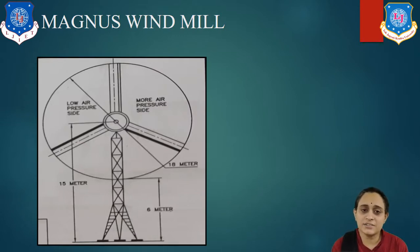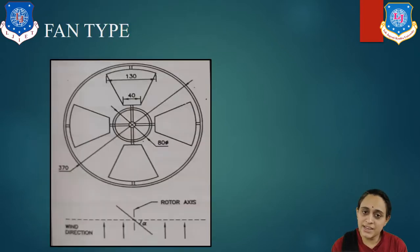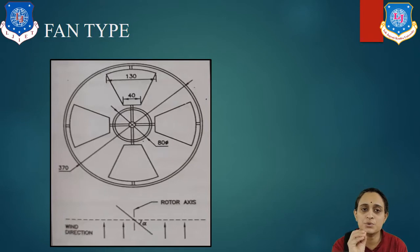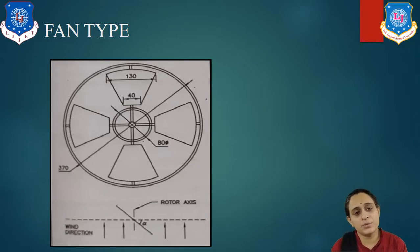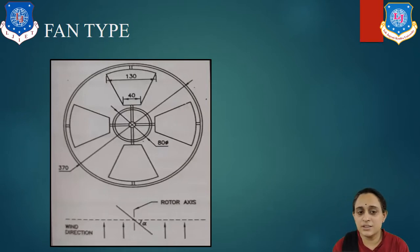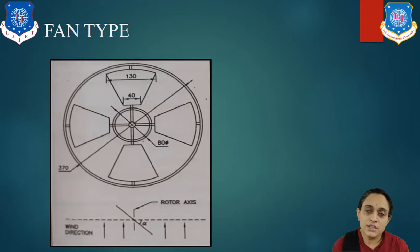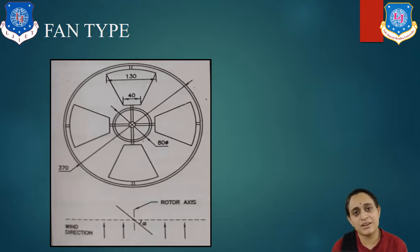Now let us look at the fan type windmill. Its name indicates that fan blades are used in this system. The blades are made from iron strips covered with canvas cloth. The rotor is big and contains two, three, or more wings. It is generally used for water pumping.